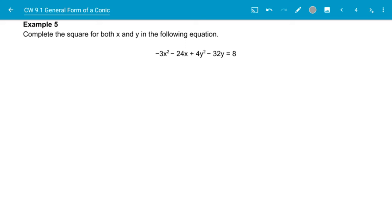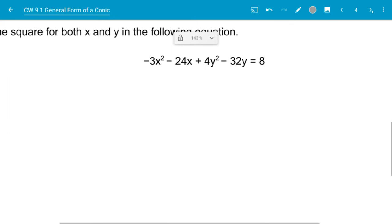In this example, we're completing the square for both x and y. So first thing that we need to do is we have here's our x portion and here's our y portion. We're going to set the coefficients for x squared and y squared to 1. So out of the first portion there,